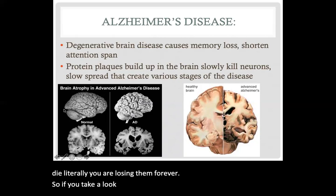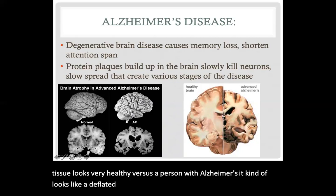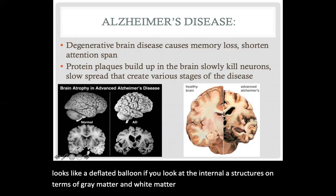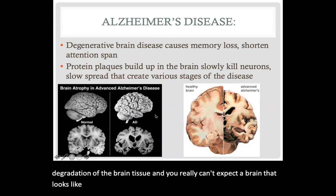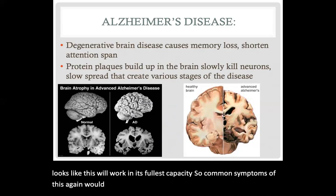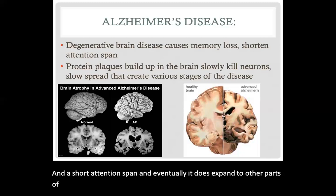Looking at these pictures, you have a normal brain tissue that looks very healthy versus a person with Alzheimer's — it kind of looks like a deflated balloon. Looking at the internal structures in terms of gray matter and white matter, you can see significant degradation of the brain tissue, and you really cannot expect a brain that looks like this to work at its fullest capacity. Common symptoms include memory loss and short attention span, and eventually it expands to affect other parts of the body.